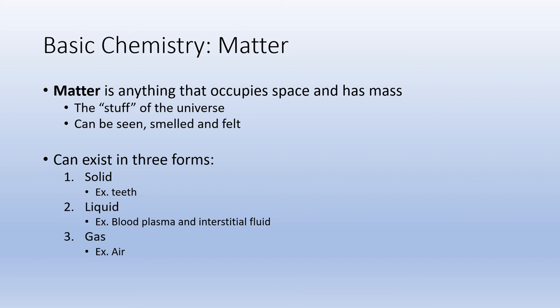The first part of chemistry we are going to talk about is matter. To keep things simple, we will call matter the stuff of the universe — it is really anything that occupies space and has mass. Matter can be seen, felt, or smelled, and we see it exist in three different forms. Matter can exist as a solid, which we see in teeth and bones; as a liquid, such as cerebrospinal fluid surrounding the brain and spinal cord, as well as blood; and also in gas form in the air that we breathe — oxygen and carbon dioxide.